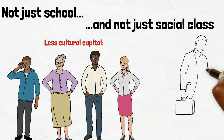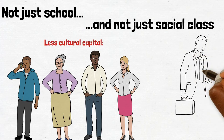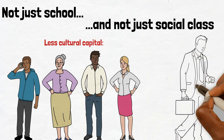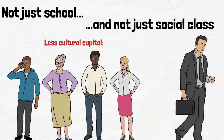Why? Remember, cultural capital is largely about fitting in with the dominant culture, and neo-Marxists argue that the dominant culture is determined by the middle and upper classes who, historically and to a large extent currently, are white, wealthy, and male.